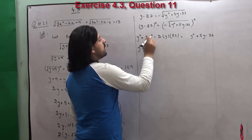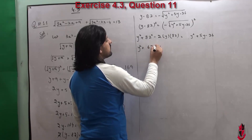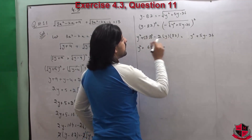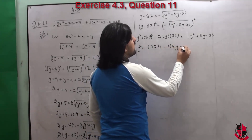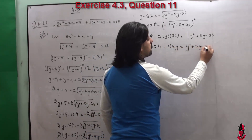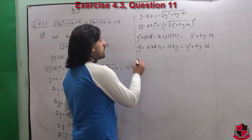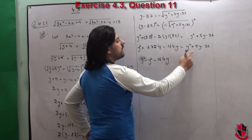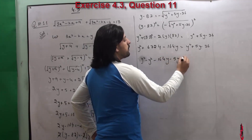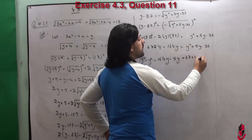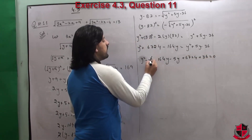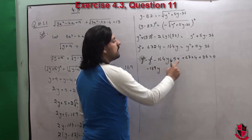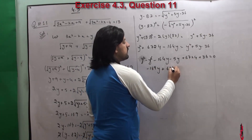Now 82² = 6724. Expanding: y² - 164y + 6724 = y² + 5y - 36. Standard form बनाने के लिए सारे terms left पर move करें: y² - y² - 164y - 5y + 6724 + 36 = 0. y² cancels, giving -169y + 6760 = 0.